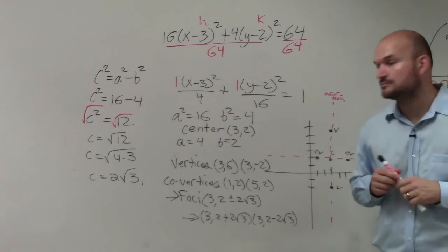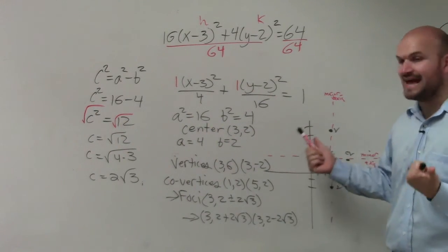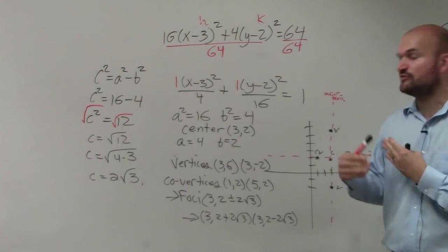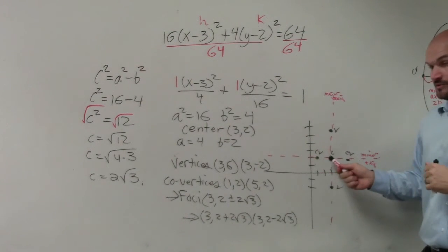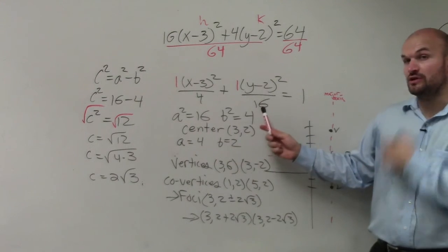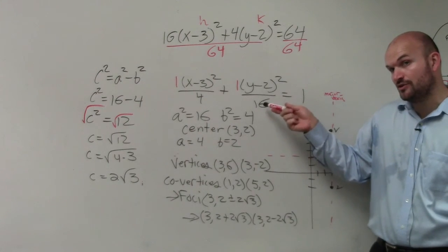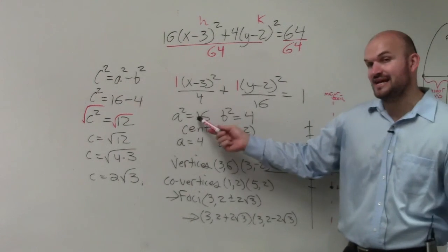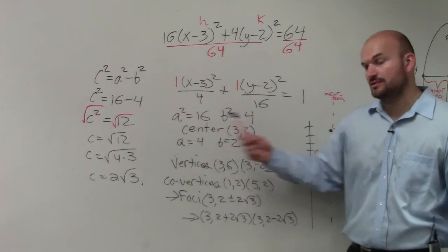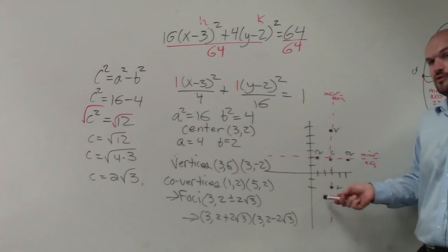Student asks about finding the vertices. All you need to do is find a. A is the distance from the center to your vertices. The center is at 3, 2. The vertices go up and down because a squared is under the y. If a squared is 16, that means a is 4. So from the center, I just went up 4 and went down 4.